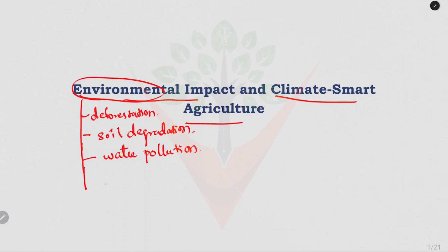Expanding the farmland can destroy natural habitats, leading to fewer plant and animal species, which reduces biodiversity. Farming activities also release gases like methane and nitrous oxide, contributing to climate change by emitting greenhouse gases.